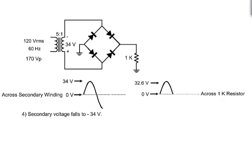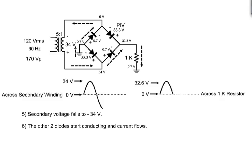The input voltage reverses polarity and begins falling toward minus 34 volts. The other two diodes start conducting, and current flows. And the load voltage rises to 32.6 volts. The peak inverse voltage across the two reverse bias diodes will be 33.3 volts.